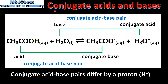Next we look at the conjugate acid-base pairs in the first reaction. The ethanoic acid is the acid and its conjugate base is the ethanoate ion. The H2O was the base and its conjugate acid was the H3O+ or the hydronium ion. The ethanoic acid and the ethanoate ion are a conjugate acid-base pair. The water and the hydronium ion are also a conjugate acid-base pair. As you can see, conjugate acid-base pairs differ by a proton or a H+ ion.